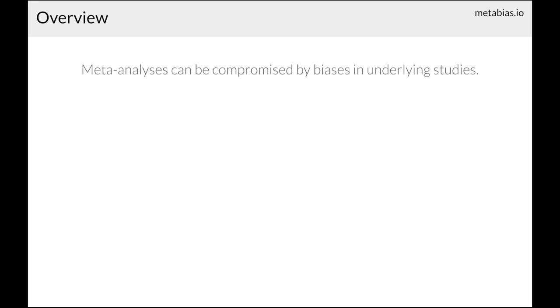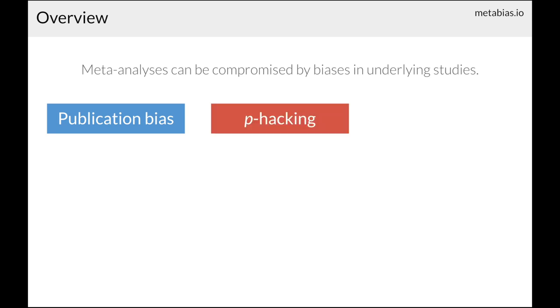So why do we need the tools that I'll be talking about today? The results for meta-analyses can be biased because of statistical bias in the underlying studies that they're using. These biases can include publication bias, where studies that are statistically significant are more likely to be published than studies with non-significant results, and p-hacking, where researchers may manipulate their data or their methods to obtain statistically significant results.